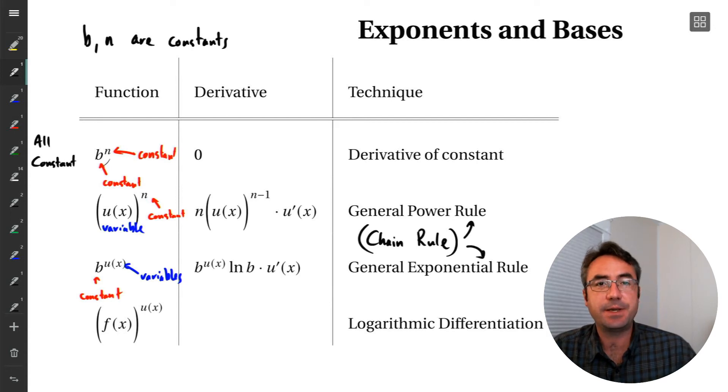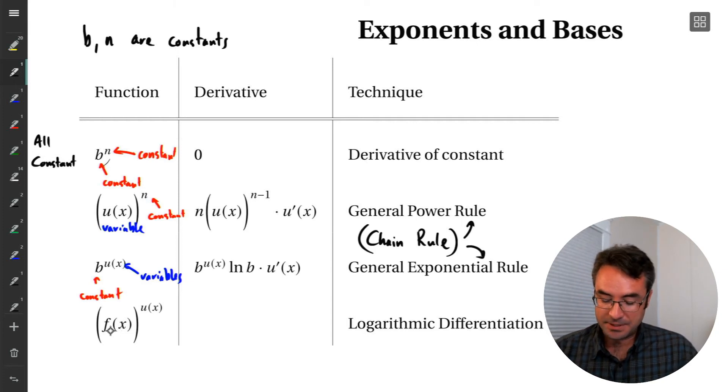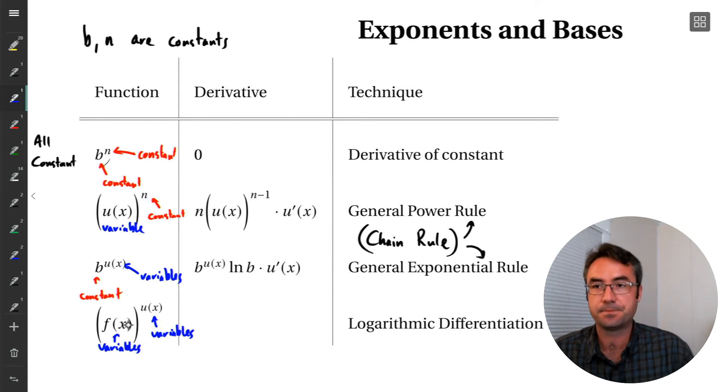Now, in the example we just looked at, the issue was the base of our expression had variables in it, and the exponent had variables in it as well. So that was probably the first function we've looked at where this is true. Both the base and the exponent are variables. So it was a function of x being raised to another function of x, and there's no nice formula for what that derivative is. We have to use logarithmic differentiation in order to calculate it. So we don't have a nice little general power rule here or general exponential rule that allows us to quickly calculate that. We need to use the technique of logarithmic differentiation.